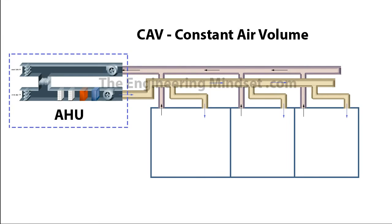From this schematic representation of the CAV system you can see just how it's connected. All the rooms are connected to this main duct, and the only form of temperature control is in the main AHU. That means all these rooms receive the same tempered air at a constant volume. Note that you do not have to return the air back into the supply ducts — it can be expelled straight out to atmosphere as well.